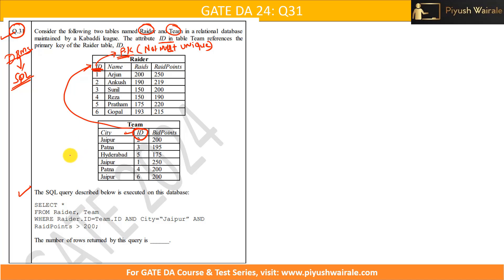Now let's discuss the SQL query. The query is: SELECT * FROM rider, team. The star means we will get all the columns in the output, since no specific columns are specified. Here, rider and team are the table names, and writing table one comma table two is basically a cross join.